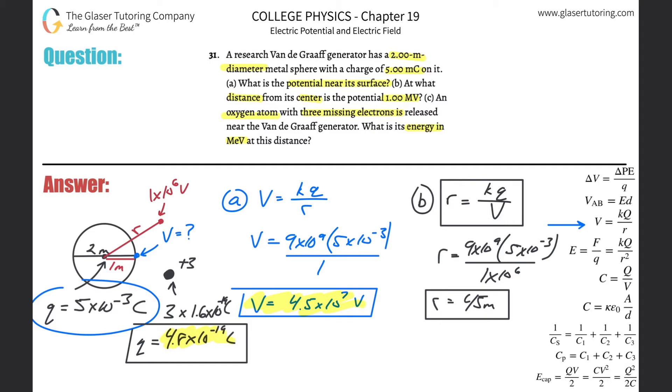I have to use this: the potential difference is going to be equal to the change of potential energy of the charge that is experiencing that potential divided by the charge that's experiencing the potential. The charge experiencing the potential is the net charge of that oxygen atom, which is three, basically net protons. Solve this for potential energy. The change of potential energy is going to be the voltage times the charge.